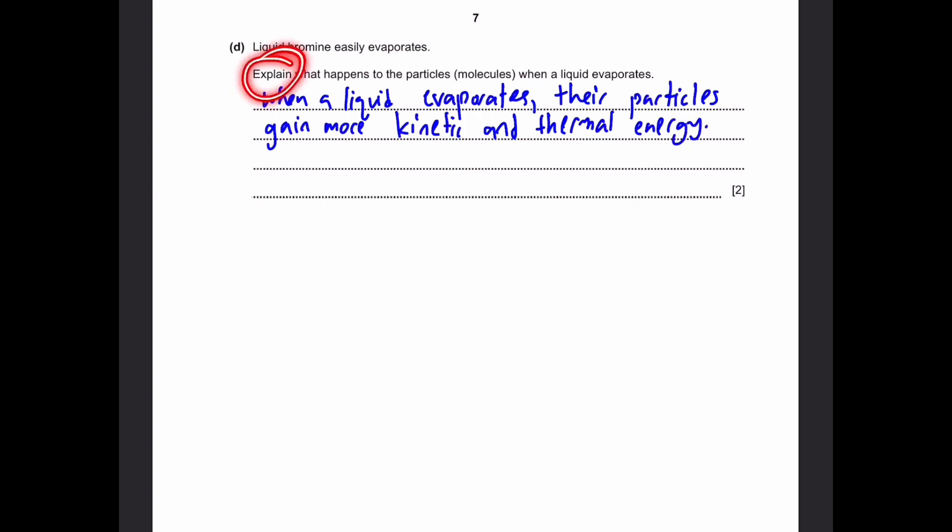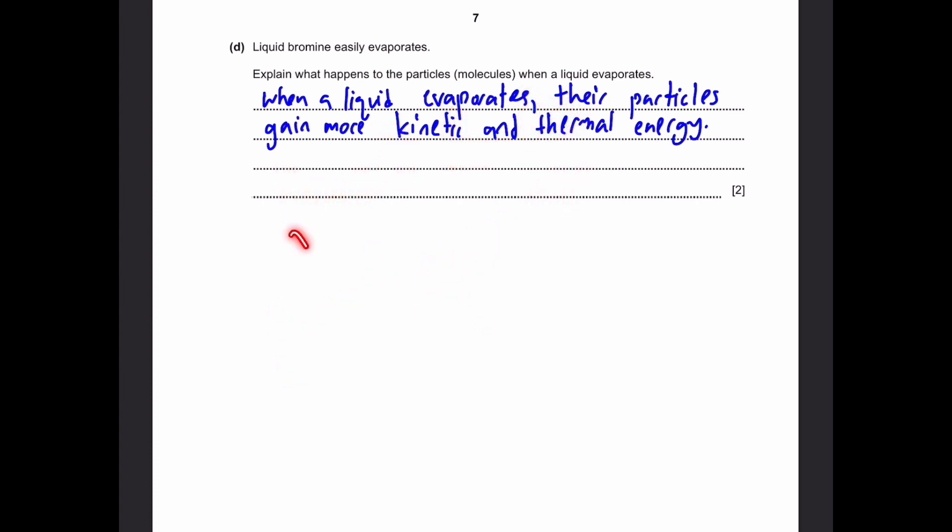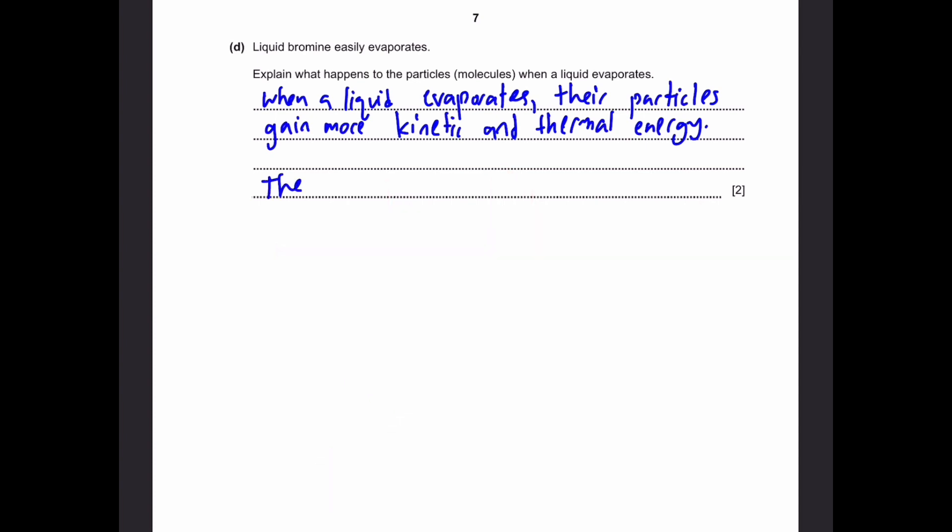But we need to see the command word - Explain. Usually in explain, we need to give two points, because it's two marks. That means that we can just say that the liquid bonds, they break apart. And then they form gas bonds, which are much lighter and much easier to solidify. So the liquid bonds break down to form gas bonds. This releases what kind of energy? Thermal energy.